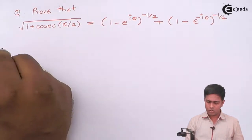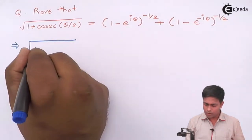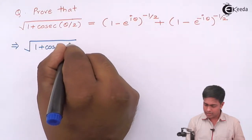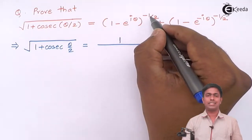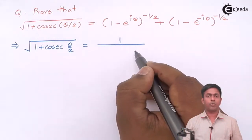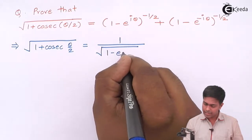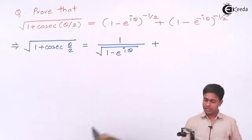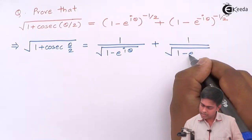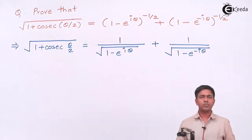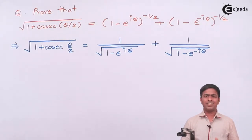I'll rewrite this term in a simplified manner. To prove this, I need to show that √(1 + cosec θ/2) equals 1 over √(1 - e^(iθ)) plus 1 over √(1 - e^(-iθ)), since the negative power going to the denominator becomes a positive power, and raising to the half is a square root.